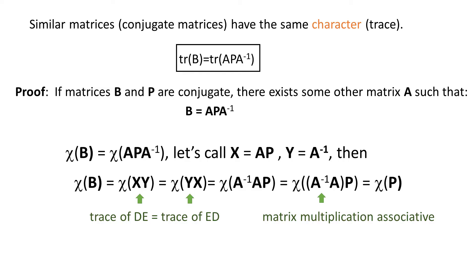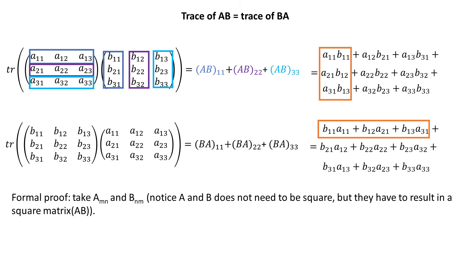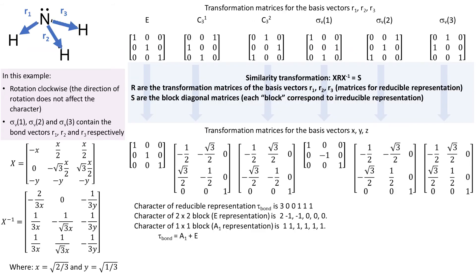We rename ap as x and a inverse as y and use the property that trace of yx equals trace of xy. This last property that the trace of some matrix AB is equal to trace of matrix BA can be easily seen when you perform multiplication on symbols.